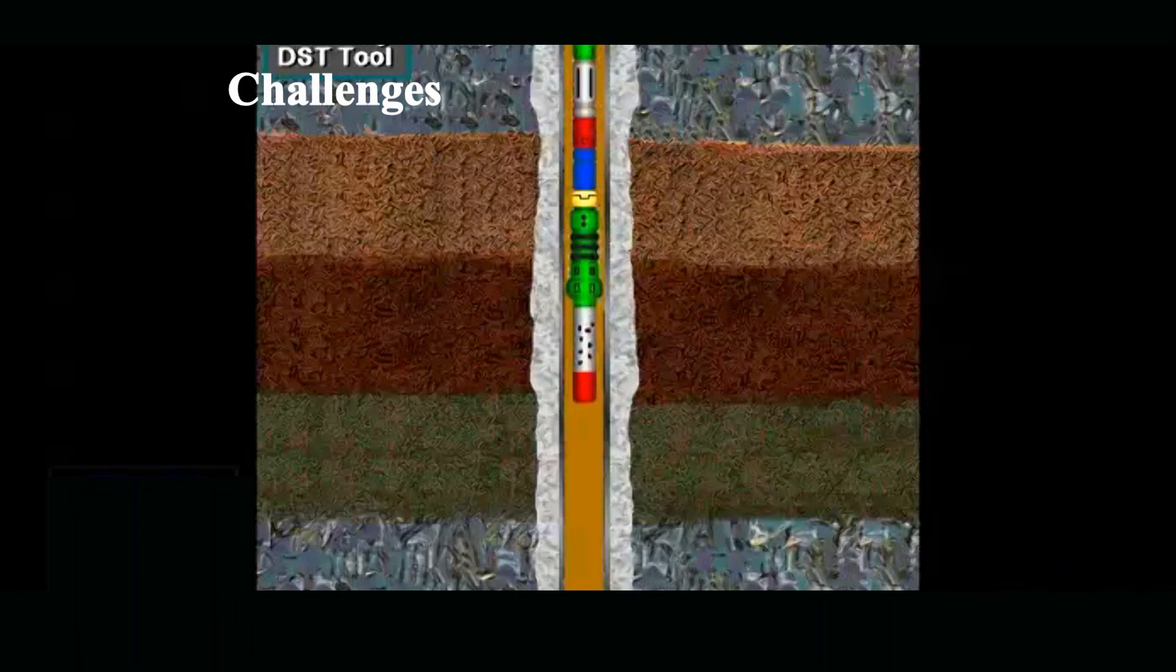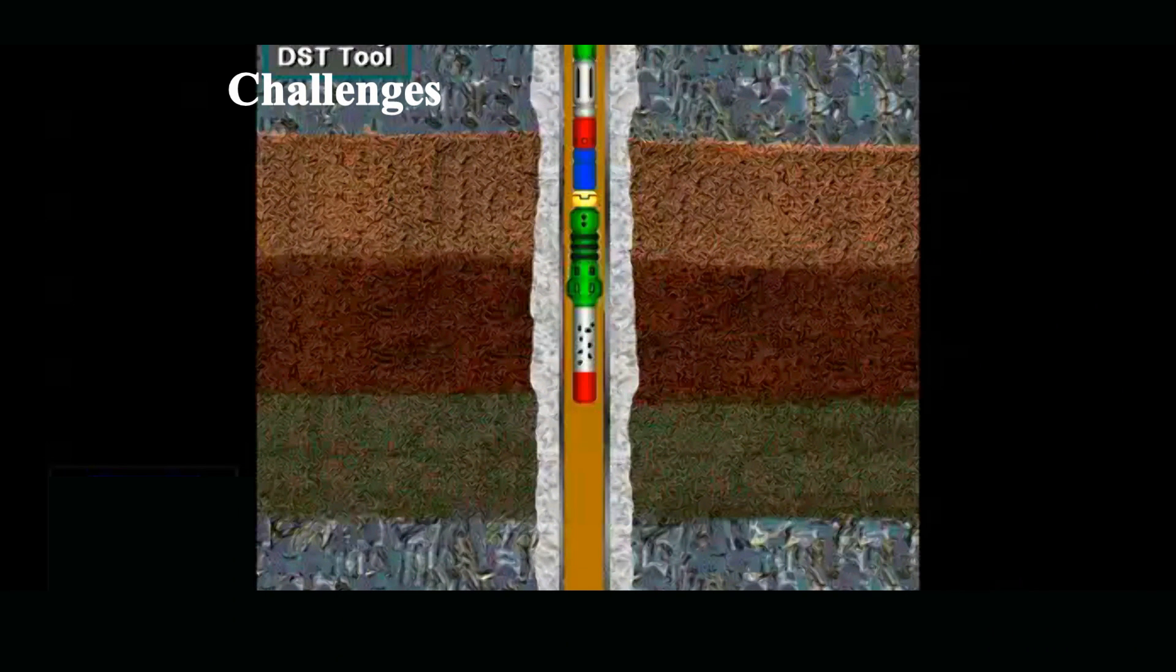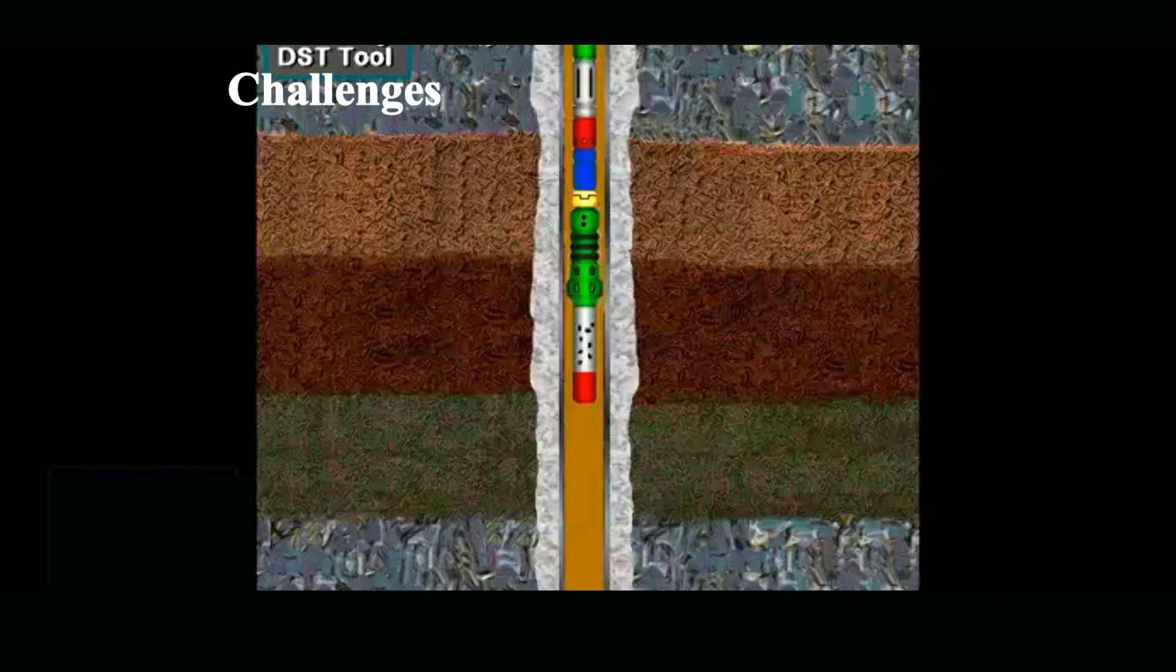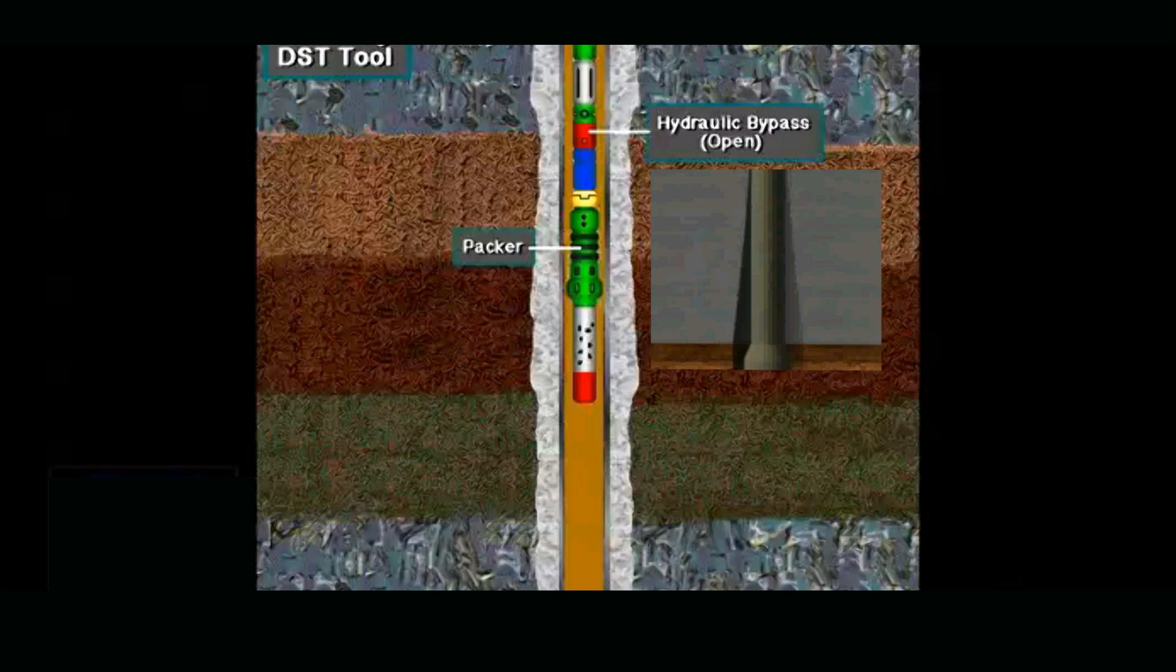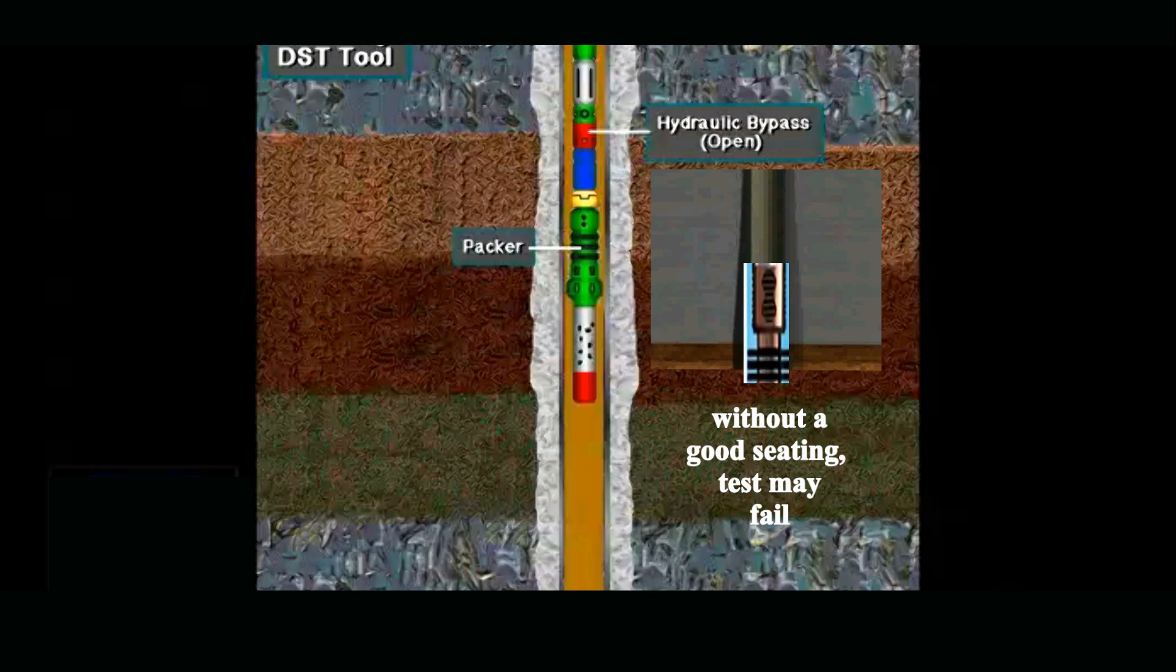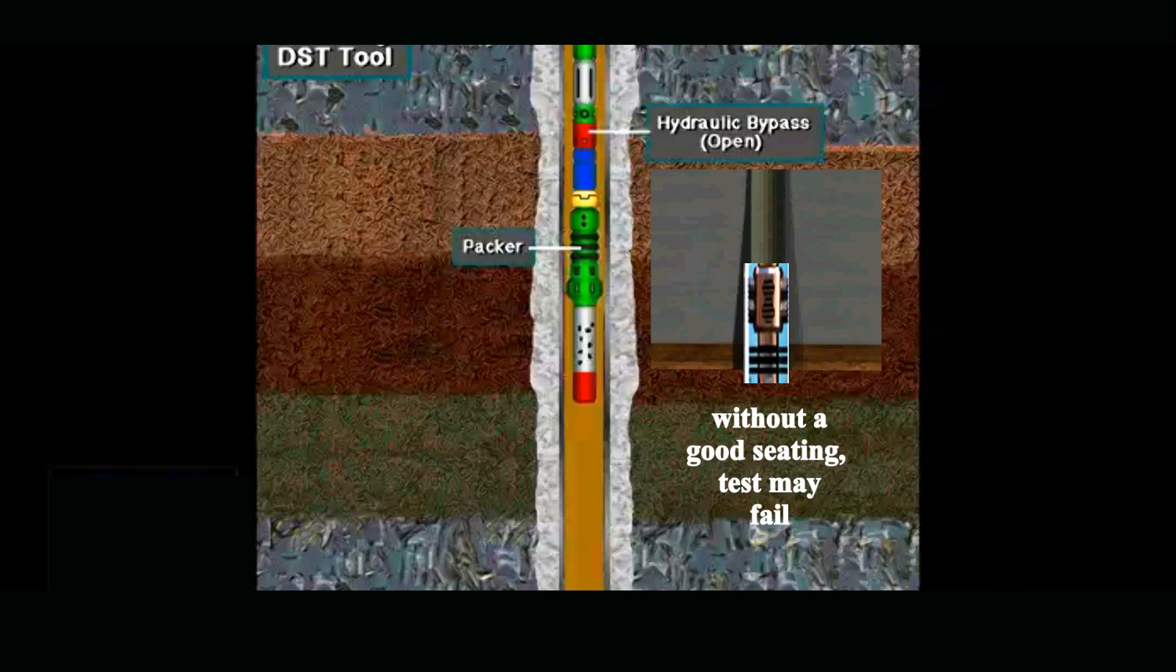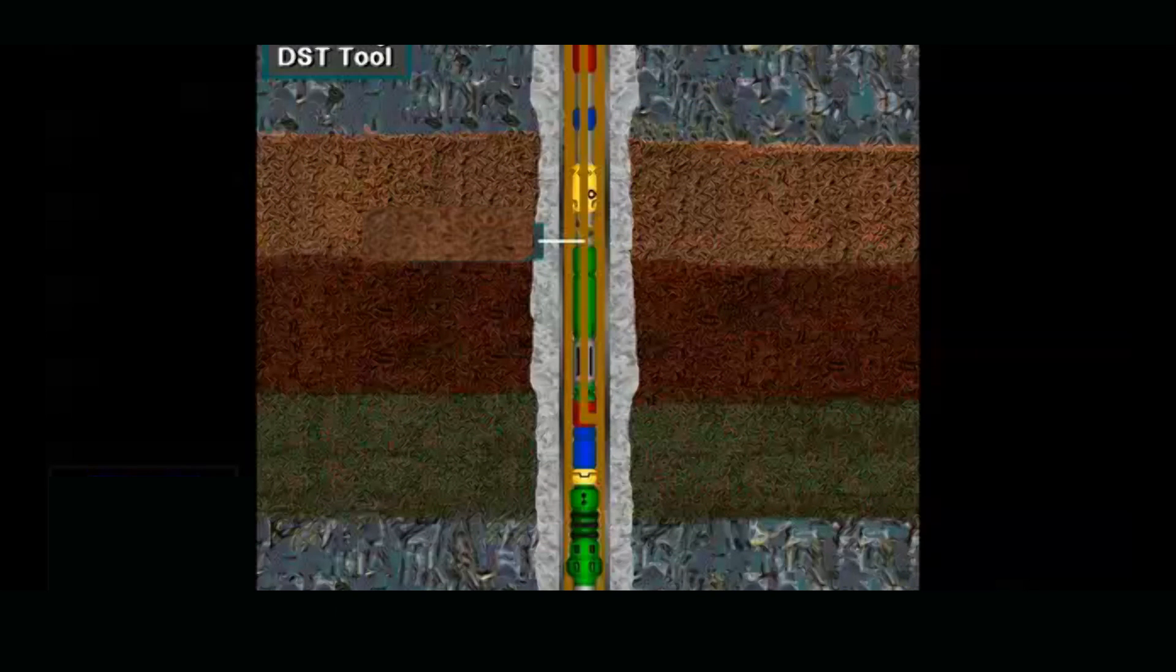Like all tests, there can be challenges when performing a DST. For example, it can often be difficult to get a good packer seating because of the irregularity of the sides of the hole. Without a good seating, the test may fail. This is especially risky if the formation to be tested has been completely drilled through.